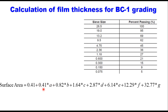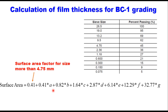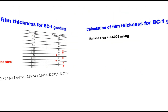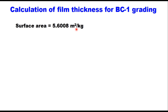Calculation starts from the 4.75 mm size — all sizes between the maximum size and 4.75 mm are ignored. The coefficients here are surface area factors, and a, b, c, d, e, f are the values passing these sieve sizes as fractions. So a = 0.45, b = 0.36, c = 0.27, and so on. Substituting these values into the equation gives a total surface area factor of 5.600 m²/kg.